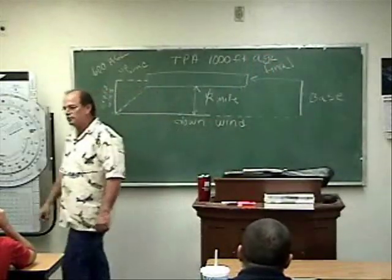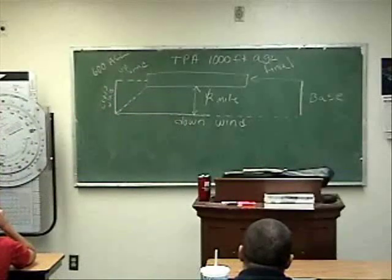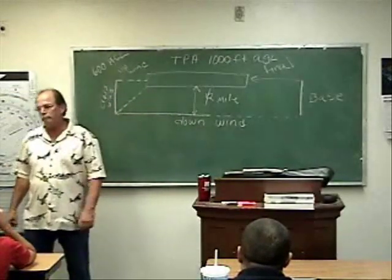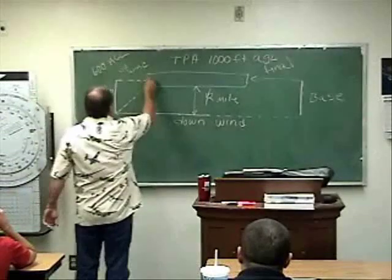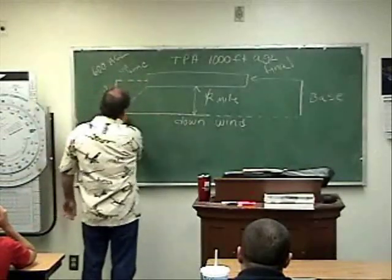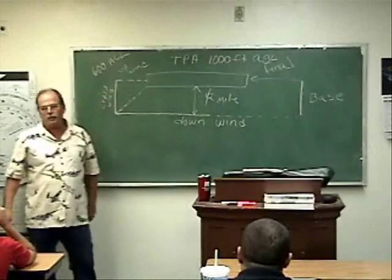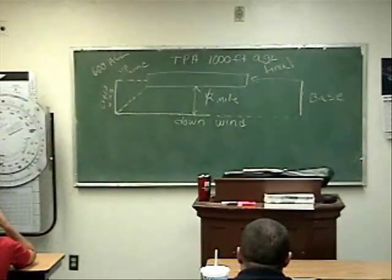Traffic pattern altitude. The altitude at which you fly your traffic pattern is 1,000 feet AGL. So when you're doing all of your climbing here, here, and probably still some into your downwind leg, once you reach 1,000 feet AGL, level off.